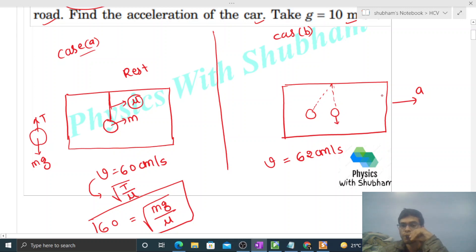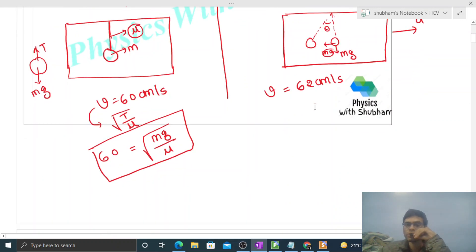Because when we draw its free body diagram from the frame of reference of the car, at that time mg will act and a pseudo force ma will act in the backward direction. So that's why because of this ma, this ball shifts from vertical by some angle theta, right? And when we draw its free body diagram it will be something like this.